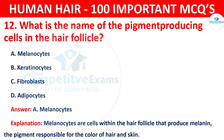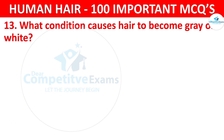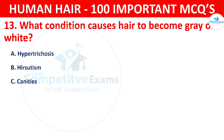Question number 13. What condition causes hair to become grey or white? The options are hypertrichosis, hirsutism, canities, or trichotillomania.